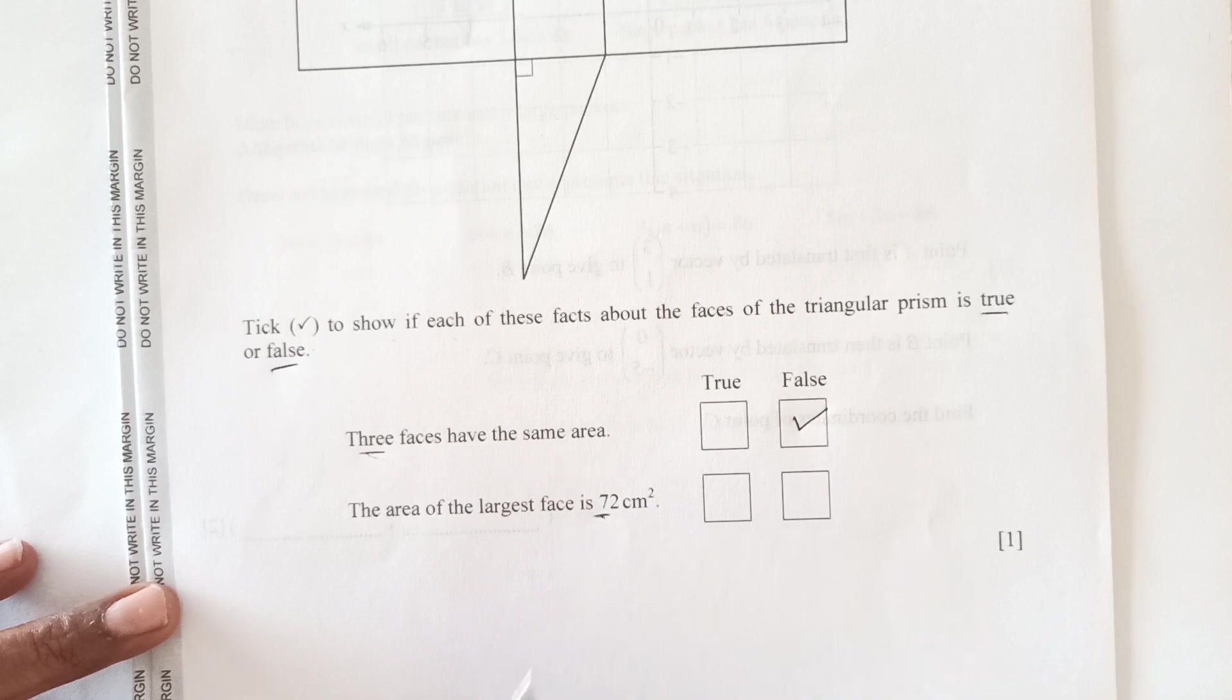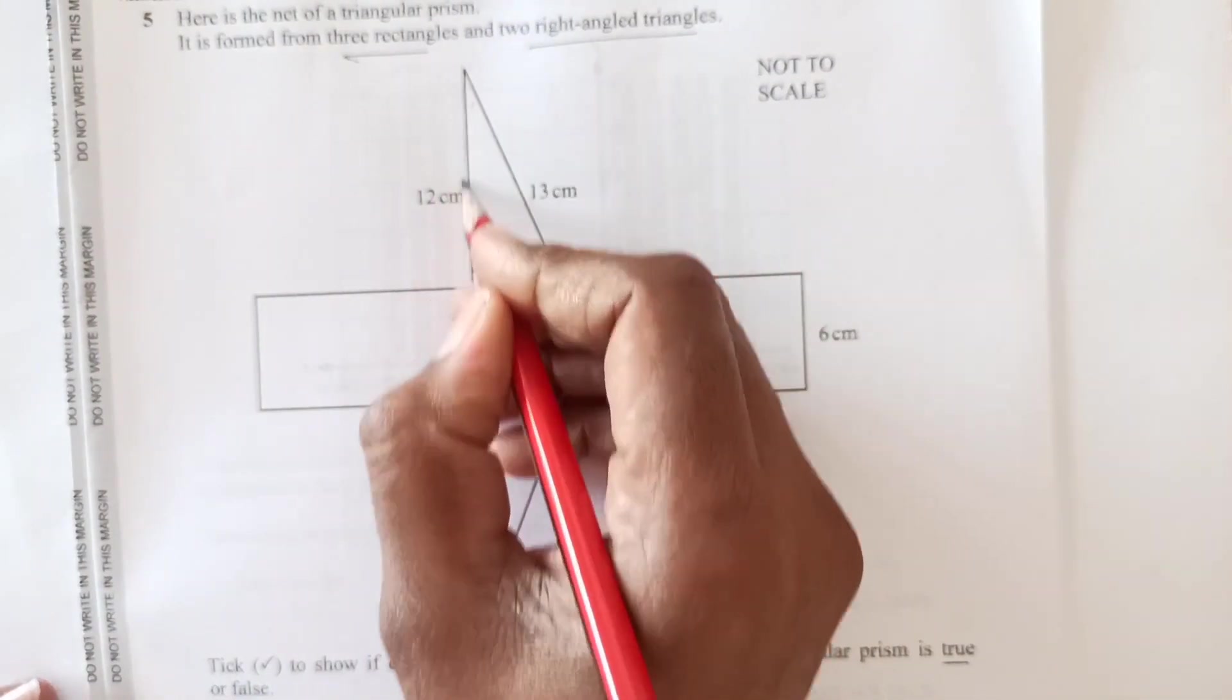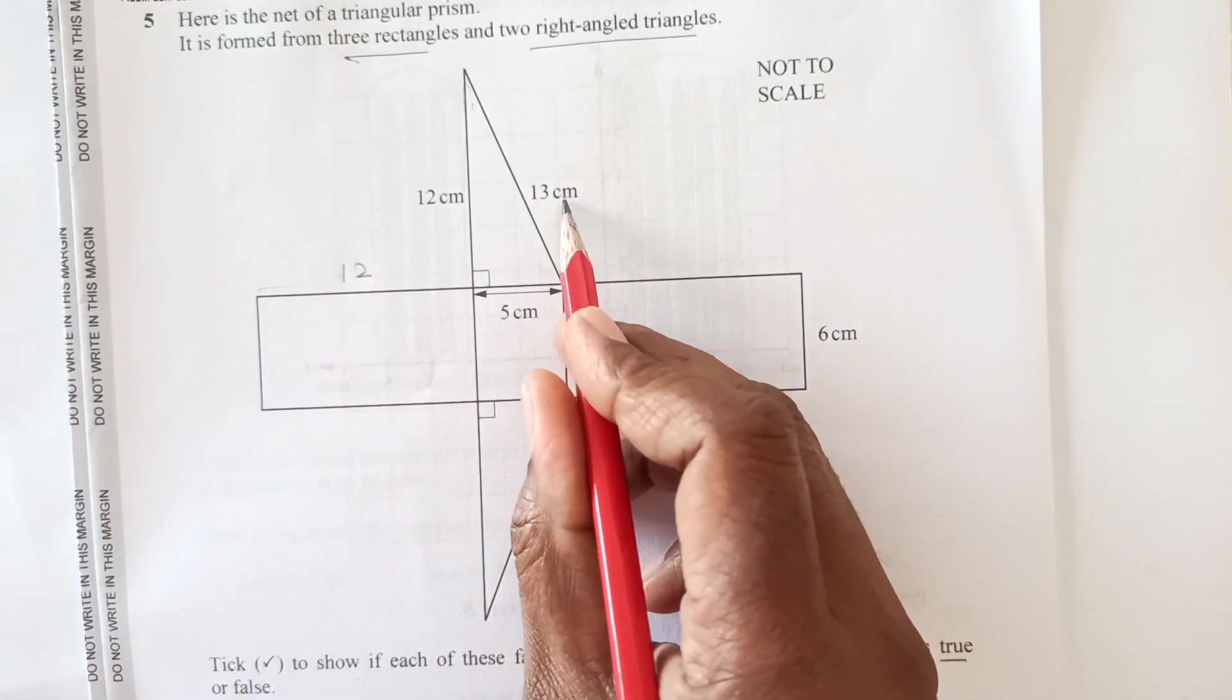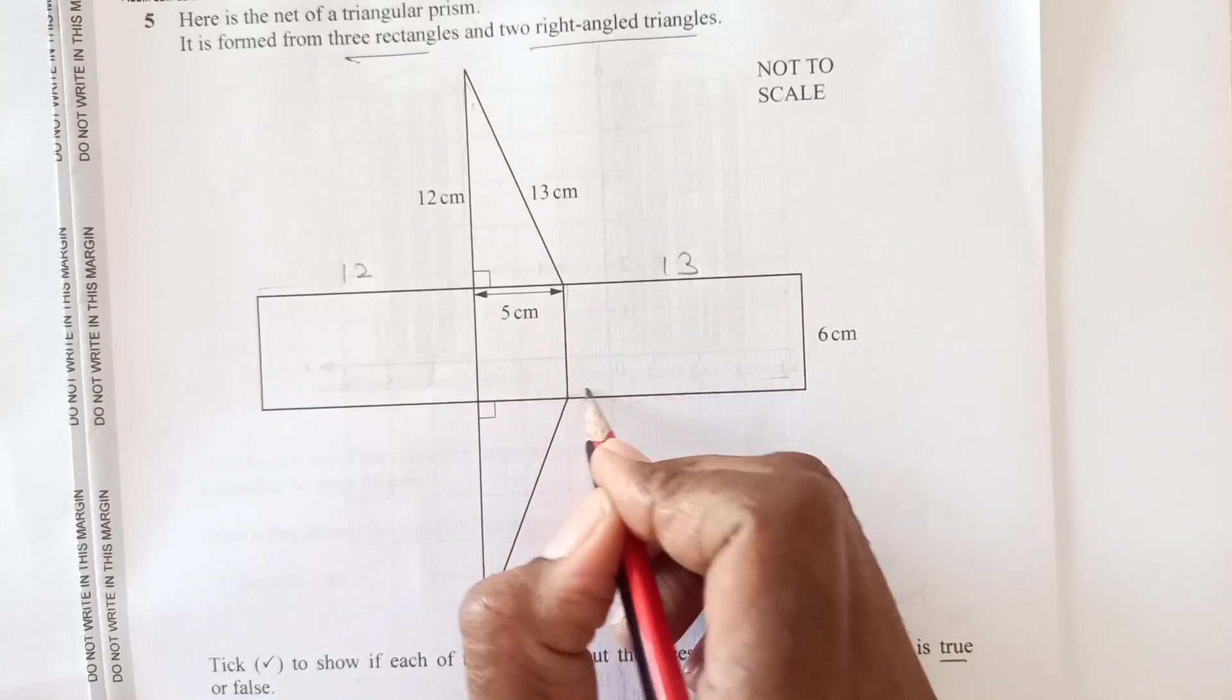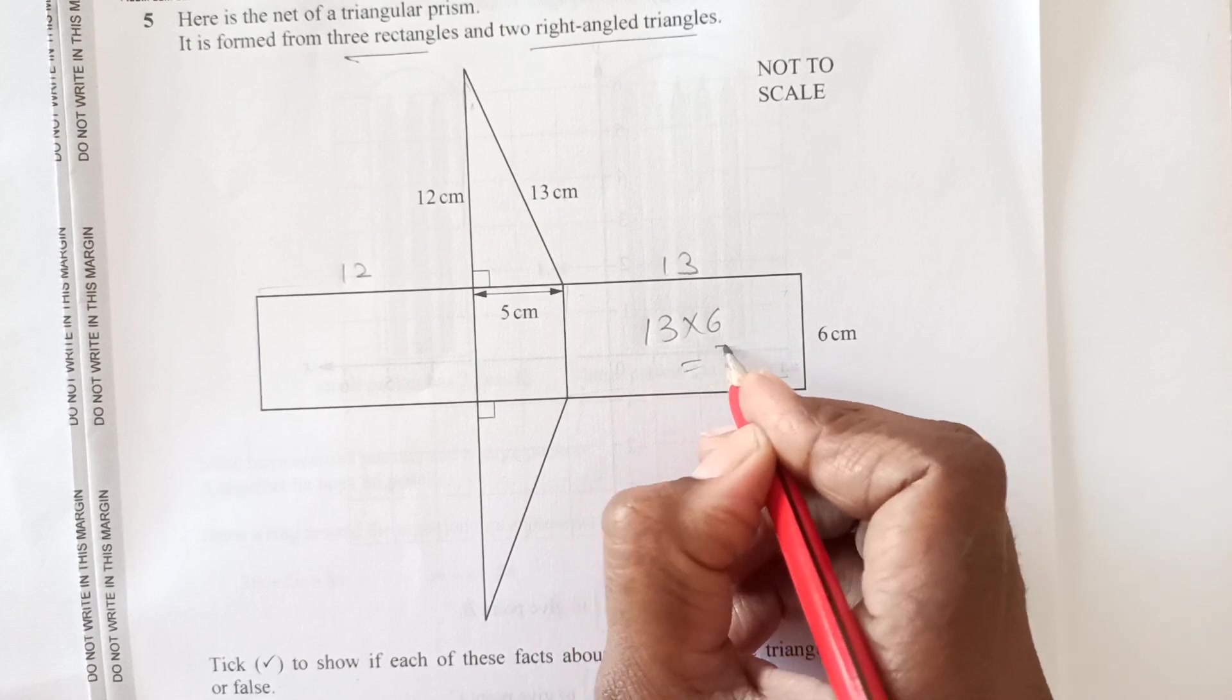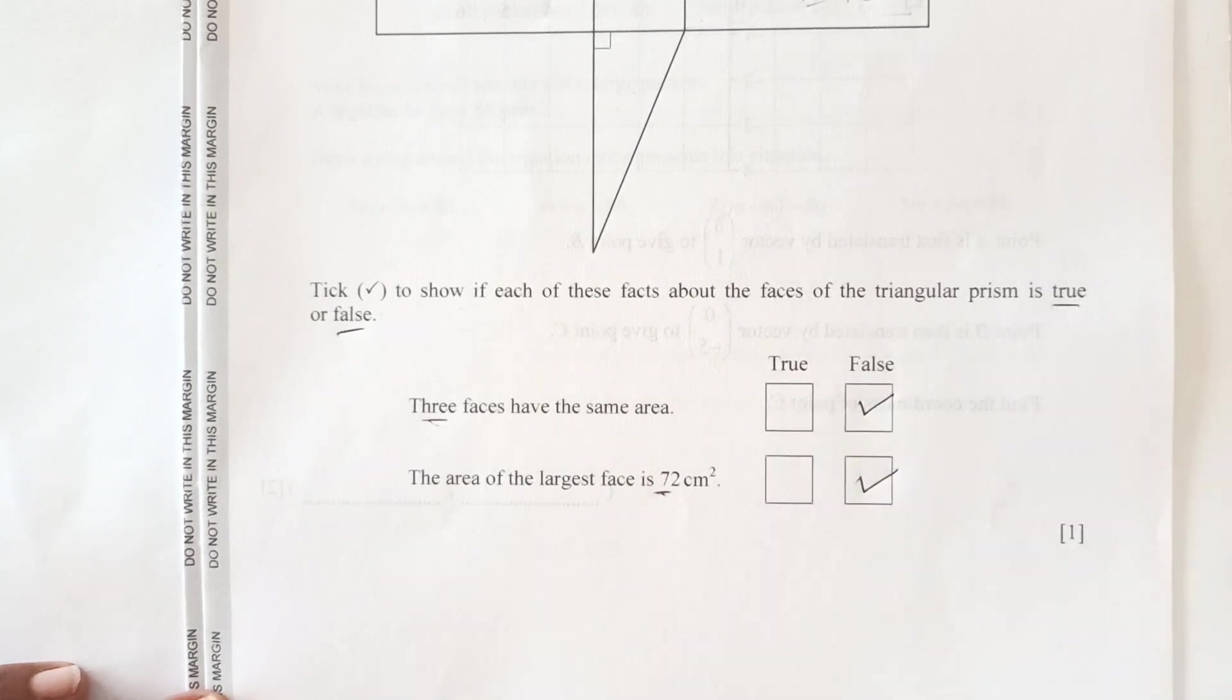The area of largest face is 72. So the largest face, if you see if this one is 12, so this is going to be 12 as well and this is going to be 13. So this 8, this is the biggest, you see this face. So 13 times 6 which is 78, which is not equal to 72. So this is also false.